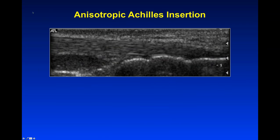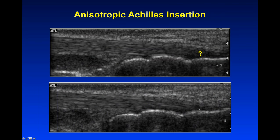Here's an example. This is the Achilles tendon coming down, and at the insertion it looks black — the question is whether that's tendinosis or a partial tear. When you tilt the probe to get more perpendicular to that part of the tendon, you can see there are actually normal fibers in there. This tells you it's normal. Over time, you'll correct for anisotropy without even realizing you're doing it.